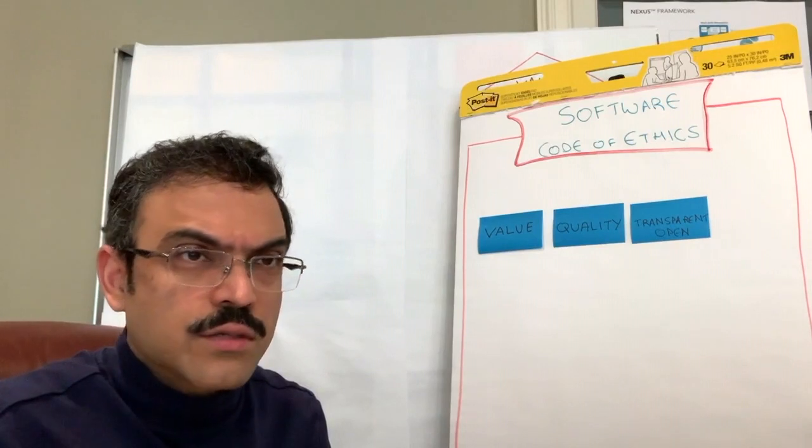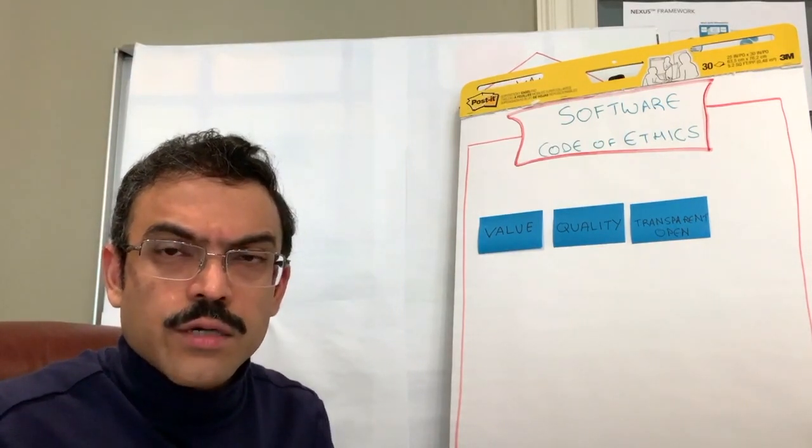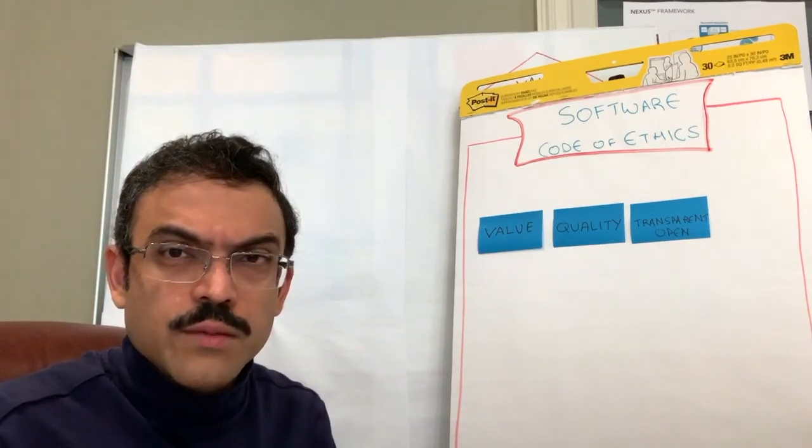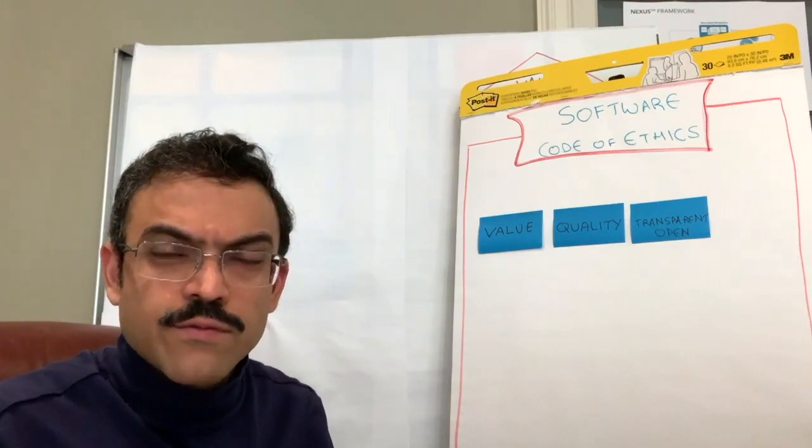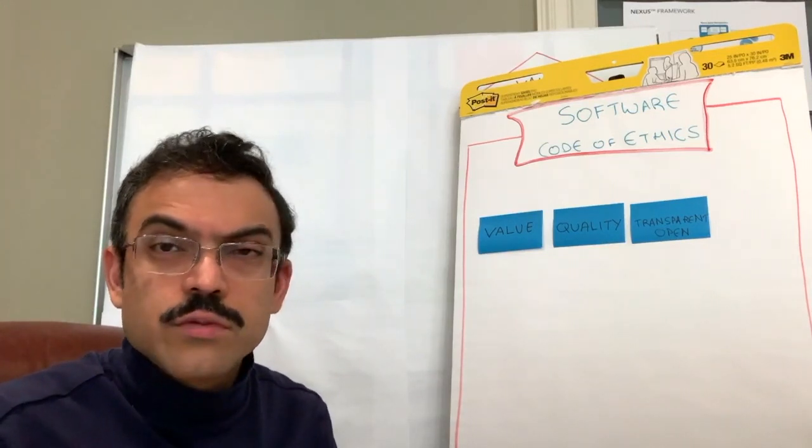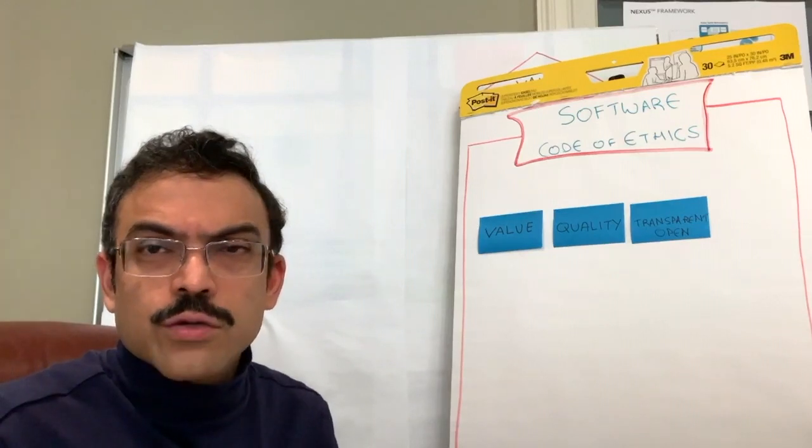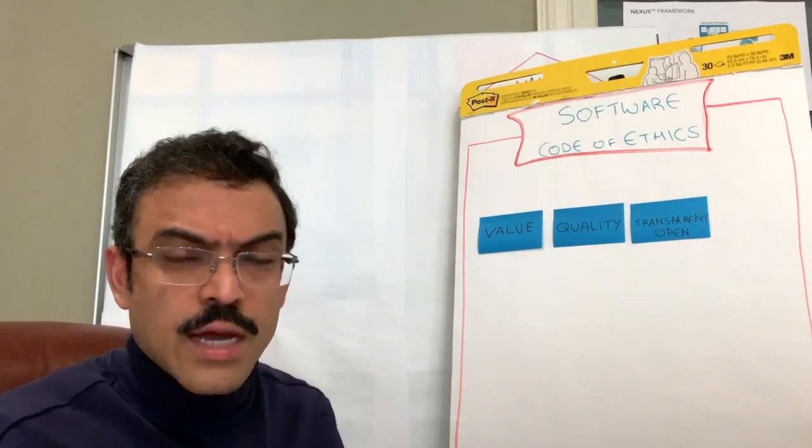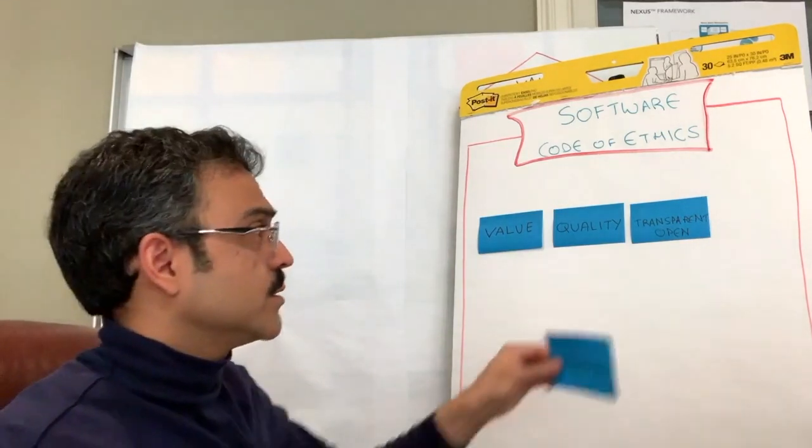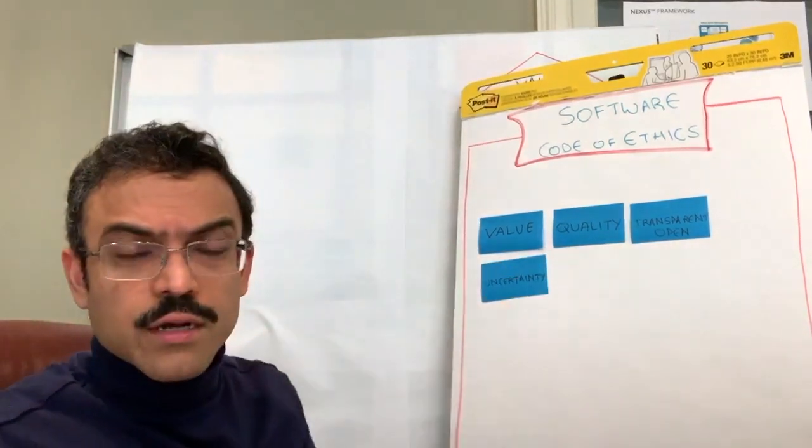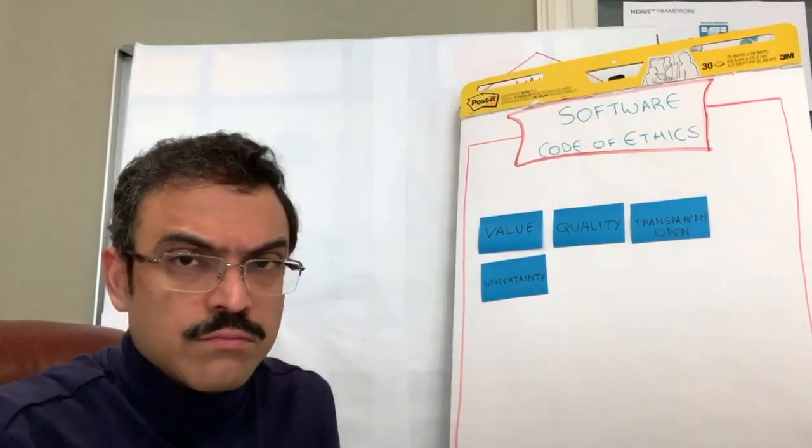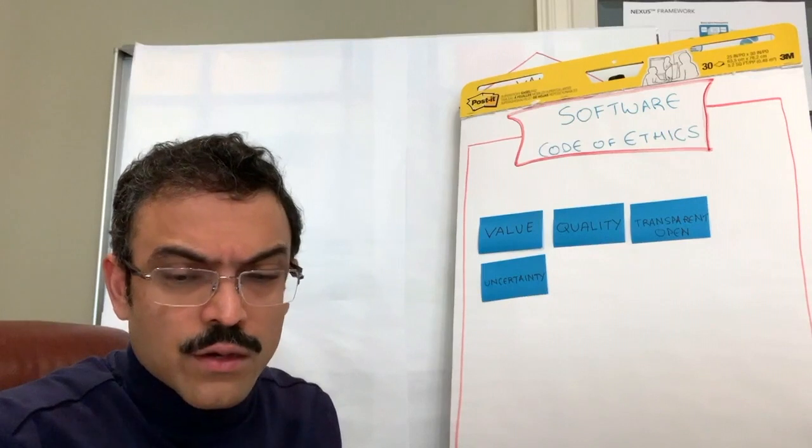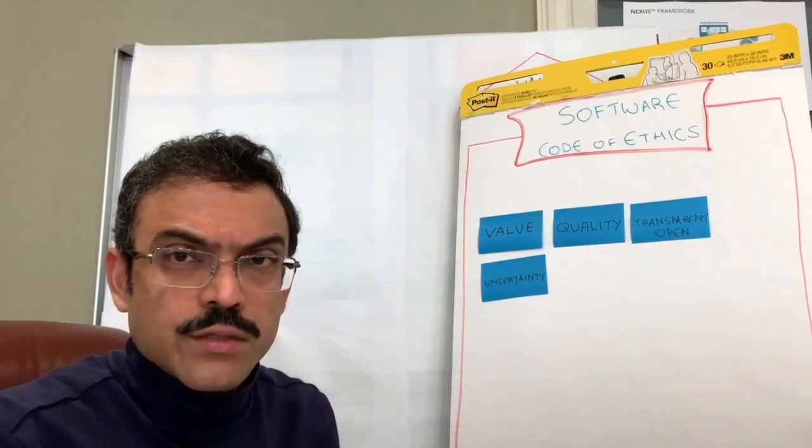So the next line on the software code of ethics is: I will not imply certainty where it doesn't exist. There's a lot of uncertainty in our line of work. Let's be transparent and say, 'Look, I can't guarantee this, and here are the risks.' We can either choose to manage the risks, live with the risks, or course-correct. But what is not okay is to be silent about the risks and pretend the risks do not exist.